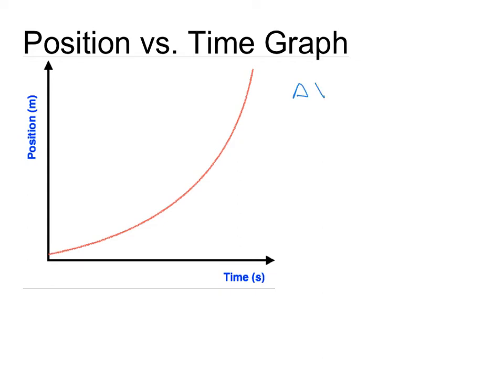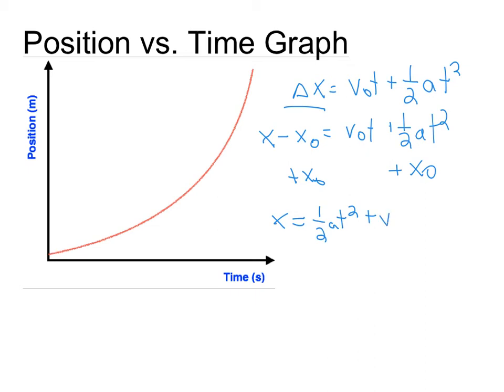We have delta x is equal to V initial t plus one half a t squared, combining like terms. And what I'm going to do here is I'm going to open up my displacement, which is x minus x initial is equal to V initial t plus one half a t squared. I'm going to add x initial to both sides to get our three term quadratic. And I'm going to rearrange the way that we like to see things in math with the quadratic up front: one half a t squared plus V initial t plus x initial. And there's our second equation.